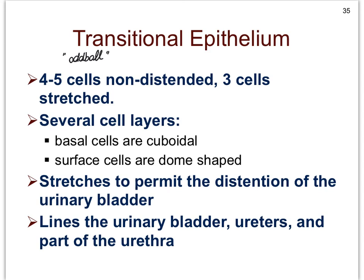Why is it called transitional? It has the ability of going from multiple cell layers — four, five, six — to three layers or even less when the organ is stretched. We find it in the lining of the bladder and the ureters — the tubes that leave the kidneys and dump urine into the bladder — and a bit in the urethra, particularly where the bladder gives rise to the urethra. If we have our two kidneys each giving rise to a ureter, here's our bladder, and then arising from the bladder in the male much longer than in the female, we have the urethra. So we have transitional epithelium lining the ureters, the bladder, and a portion of the urethra.